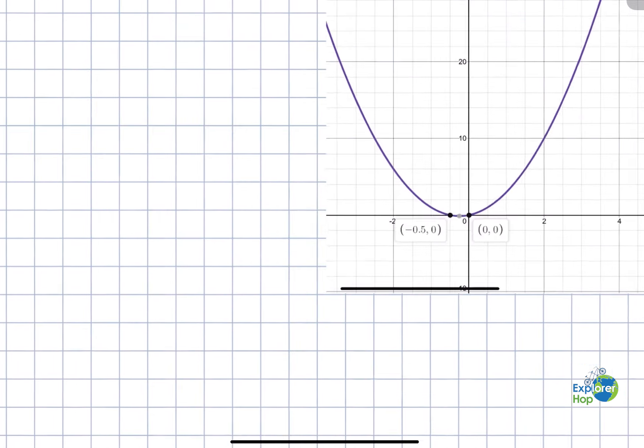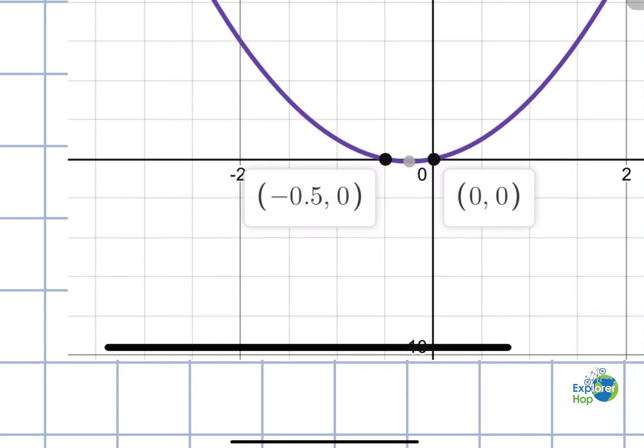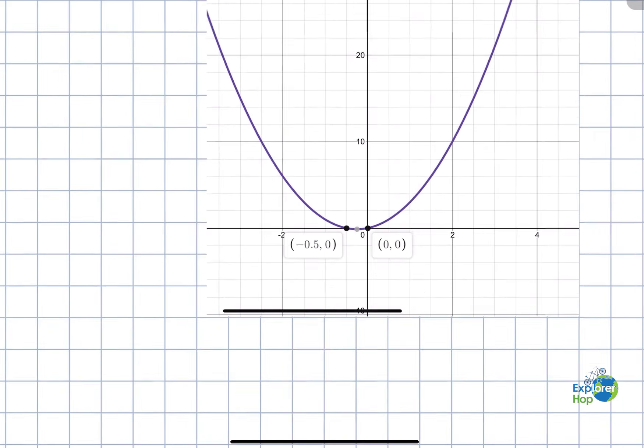We can just look at the graph. I'm going to zoom in, and you can see that the graph is less than 0 from x = 0 to x = -0.5.